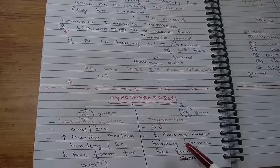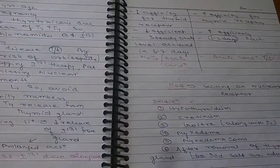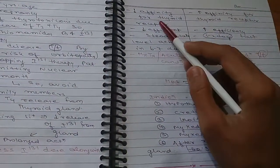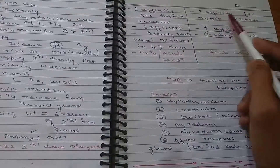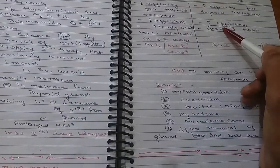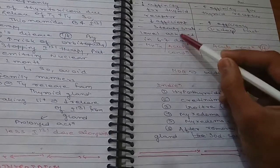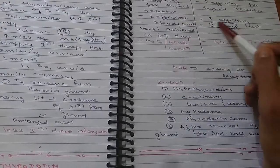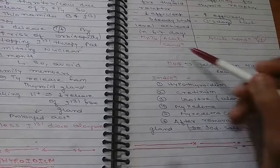Levothyroxine has increased plasma protein binding, so decreased free form for action. Liothyronine has decreased plasma protein binding, so more free form is available. It has decreased affinity for thyroid receptors versus increased affinity. It has low efficiency versus more efficiency. Steady state level is achieved in 6-7 days versus 1-2 days, so it is fast action.